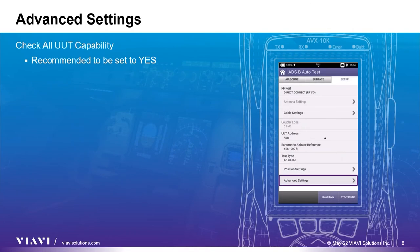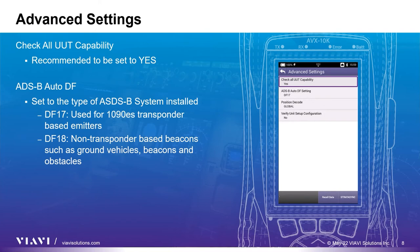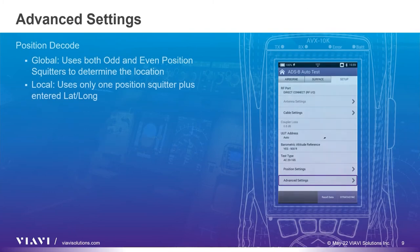The advanced settings are not changed often or may be specific to the testing environment. The check all UUT capability option should be set to yes. The ADS-B auto DF setting should be set to the type of ADS-B system installed. DF-17 is used for 1090ES transponder-based emitters, while DF-18 is reserved for non-transponder-based beacons like those used in ground vehicles and on obstacles. The position decode option has two choices — global and local. Typically this is always set to global, which ensures both odd and even position squitters are used to determine your location, and best represents the actual position determination.